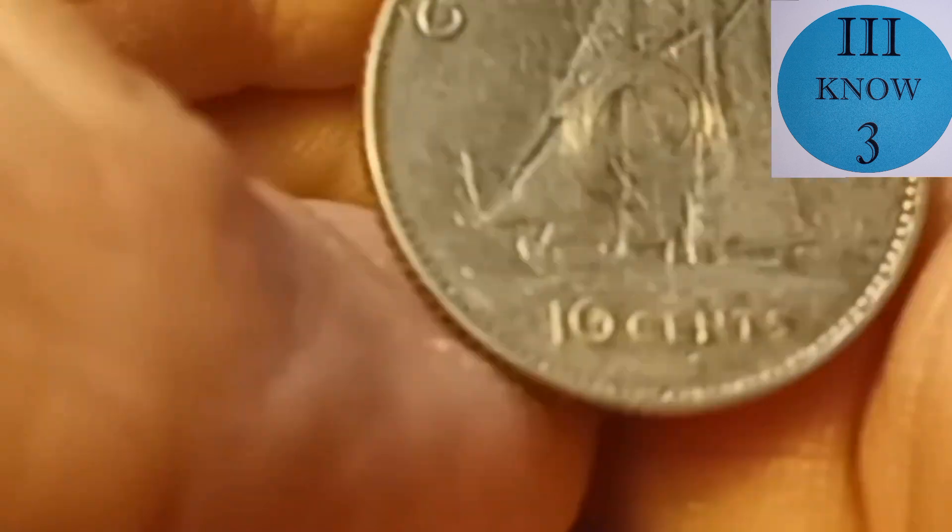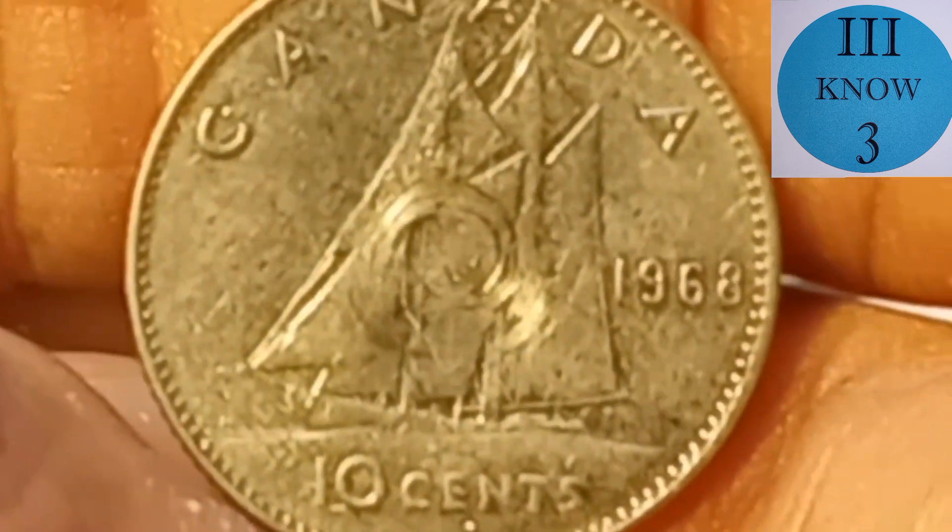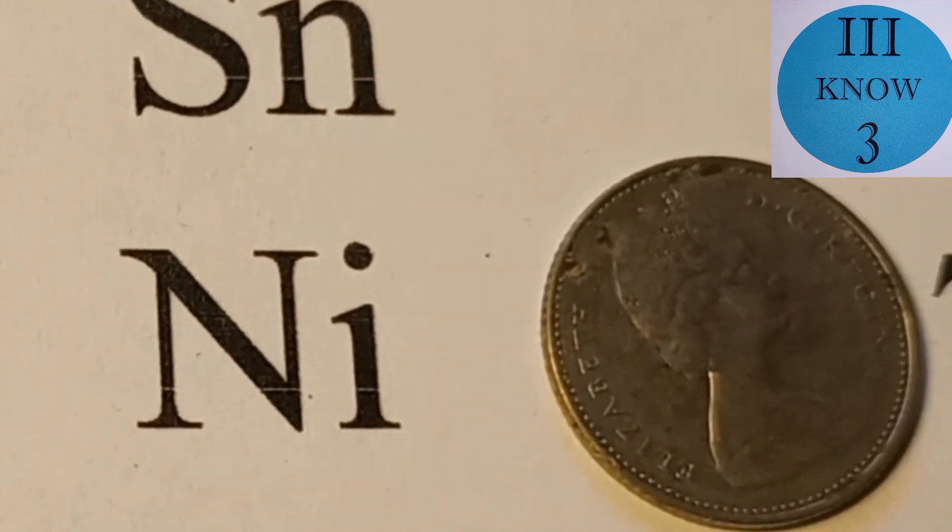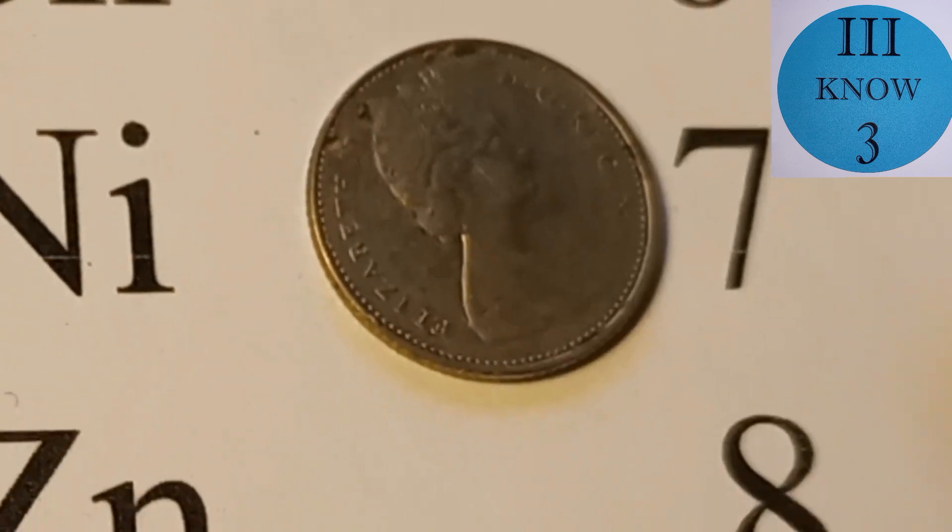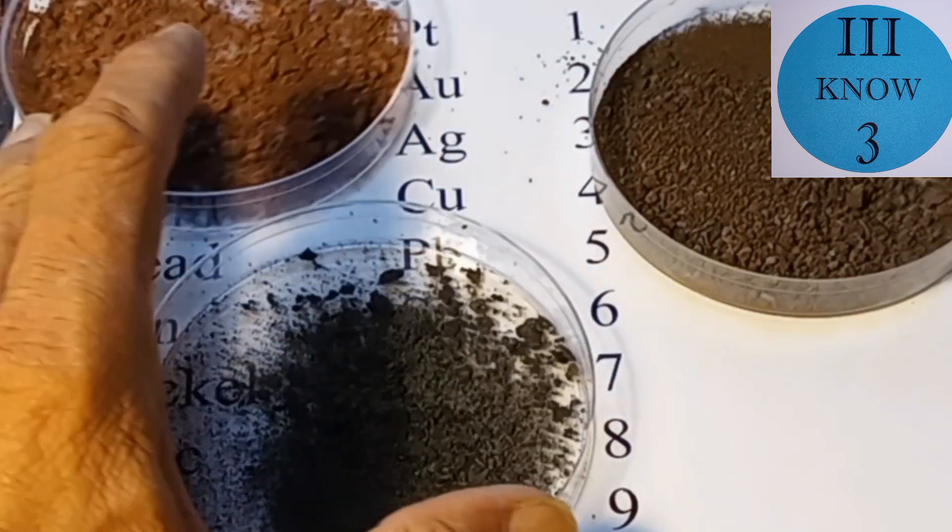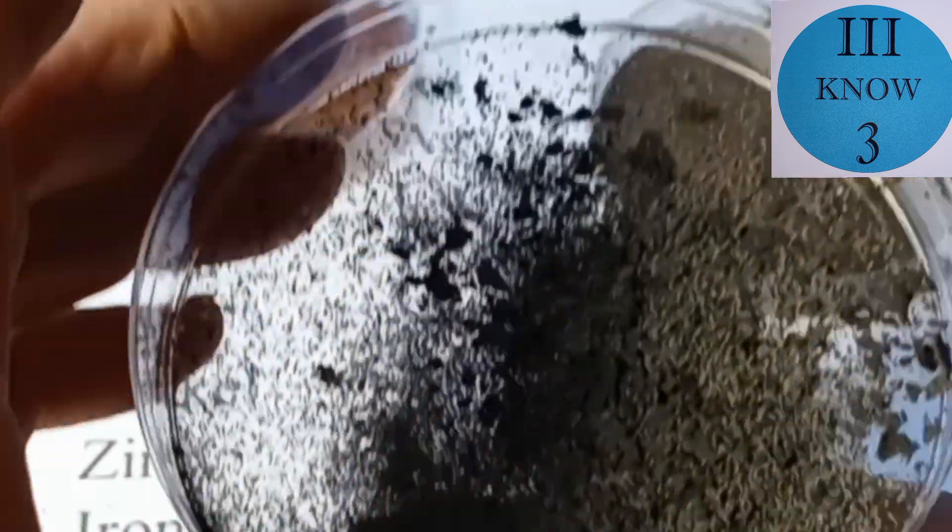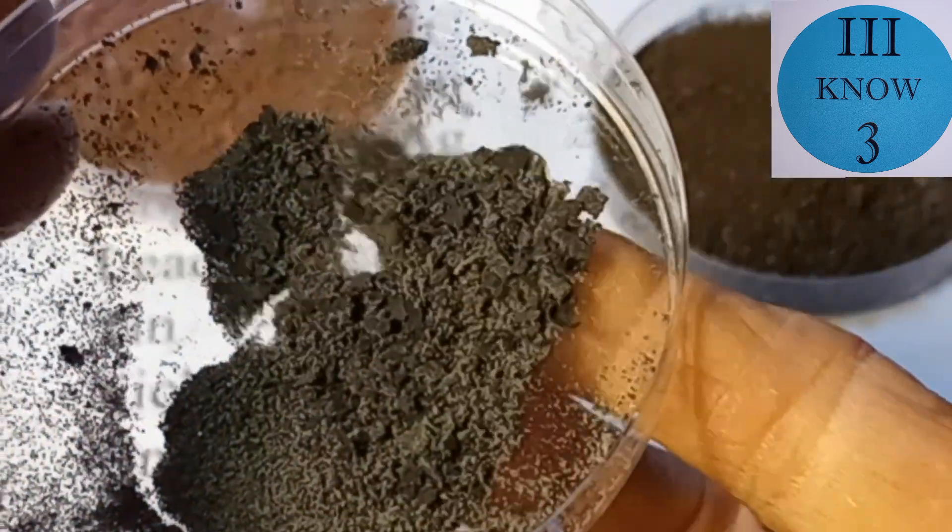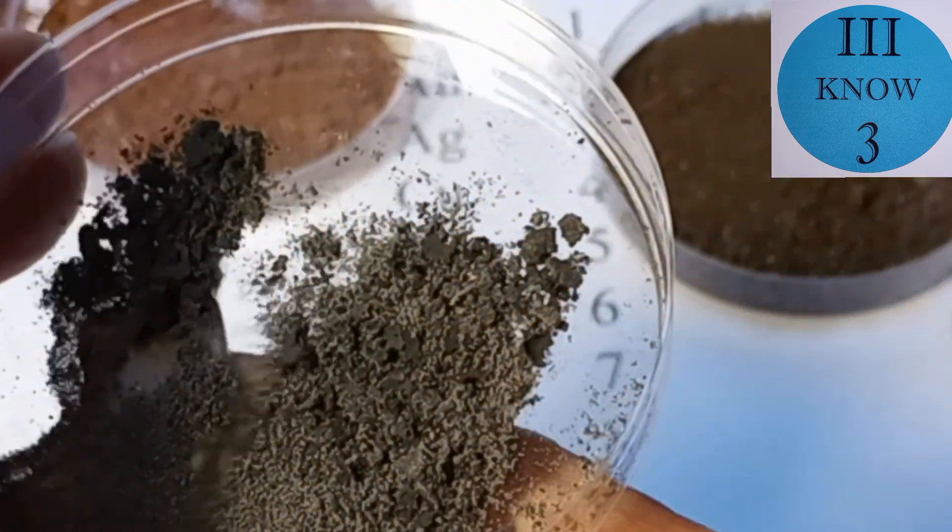Here's a Canadian dime from 1968. Canadian nickels dimes and quarters were made out of nearly pure nickel until 2000. Here's all the metal that we collected in the video. This first sample is the last that we collected that should be pretty pure nickel after all the copper was gone. See how it follows the magnet around.